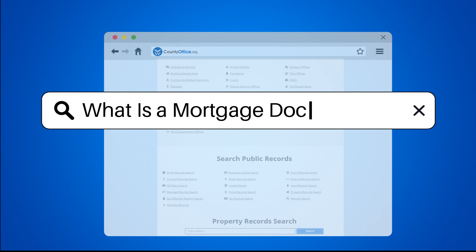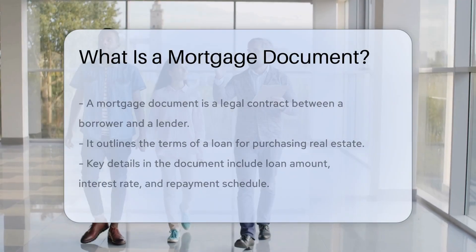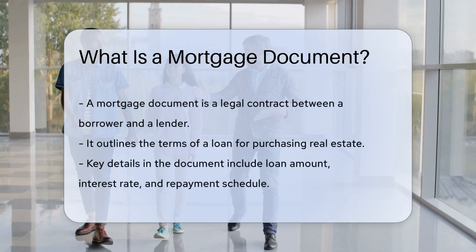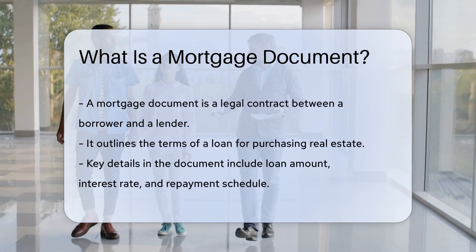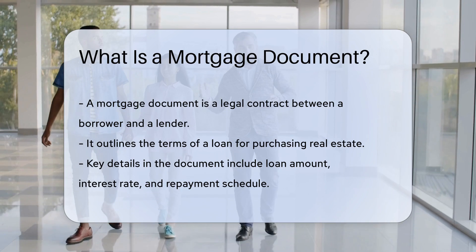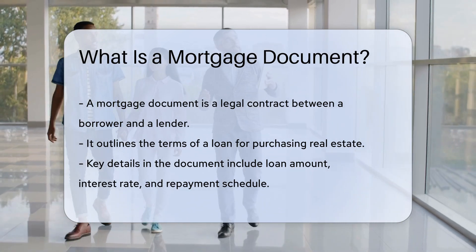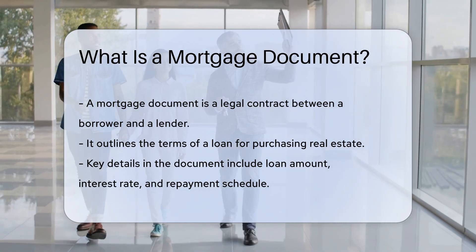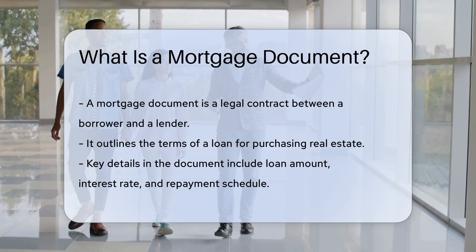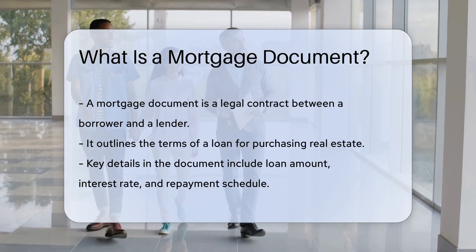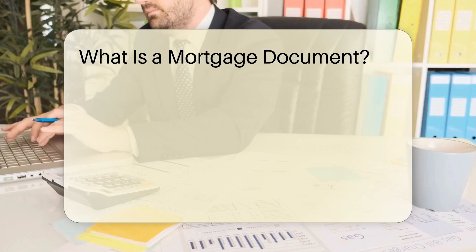What is a mortgage document? A mortgage document is a legal agreement between a borrower and a lender that outlines the terms and conditions of a loan used to purchase real estate. It includes details such as the loan amount, interest rate, repayment schedule, and consequences of default.